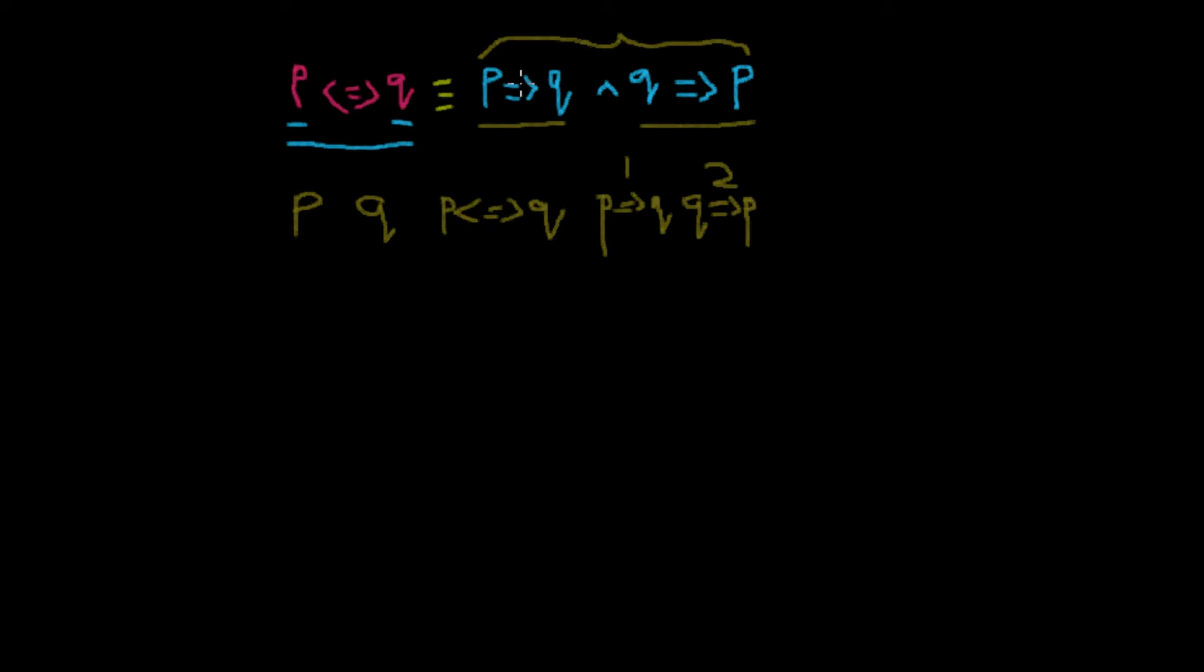The final column would be P implies Q and Q implies P, this entire statement. So we can just write 1 and 2. Statement 1 means P implies Q and statement 2 is Q implies P, and there is an AND operator between these two.